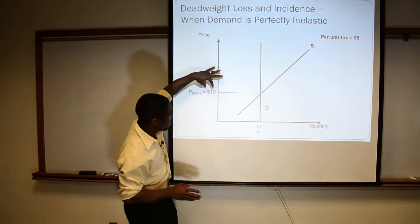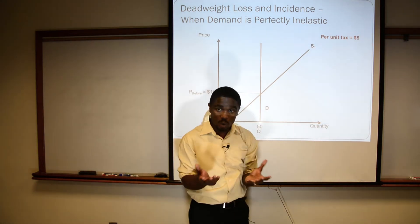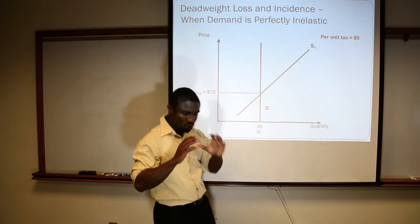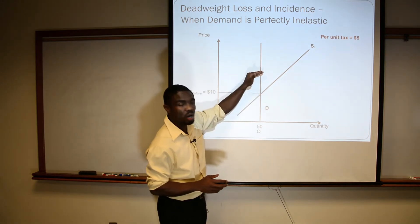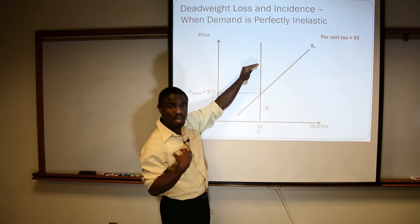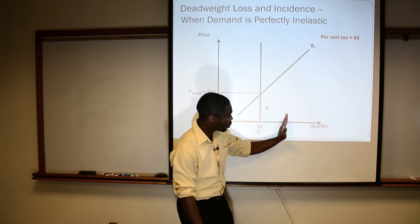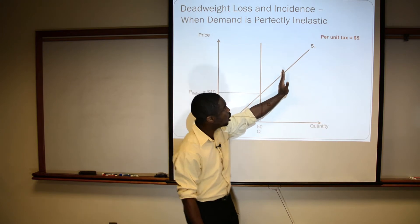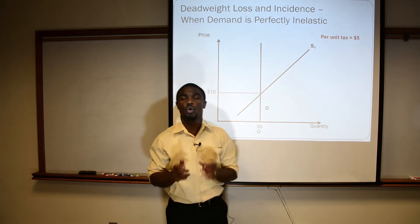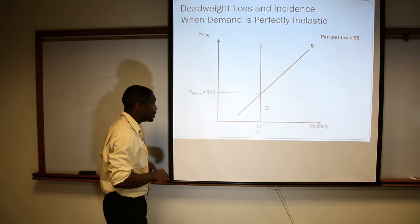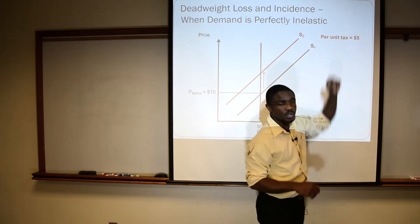If the firm really was saying $10 was its original minimum, then the firm is simply going to say: consumers, if you want this good — 50 units of this good — you now have to pay me $15, because $5 of it doesn't belong to me, it belongs to the government. And we could make the same analysis about all quantity levels. Originally I wanted a given price; now I want $5 more because $5 that used to belong to me no longer does. That can be interpreted simply as the supply function shifting up by the amount of the tax.